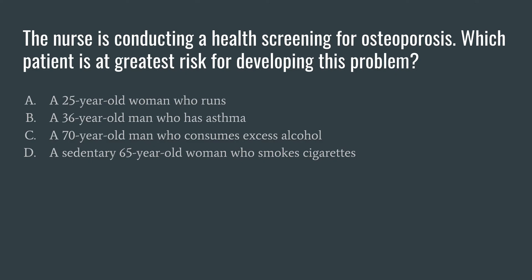Looking at option A, a 25-year-old woman who runs — she is female, but she's 25 and she's active, so she's at very low risk for developing osteoporosis. Option B, a 36-year-old man who has asthma — he's male, 36, not really that old. He does have asthma, so he's probably on some sort of long-term glucocorticoid or steroid treatment. However, he's not at very high risk either.